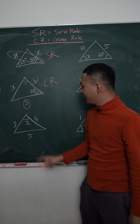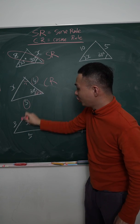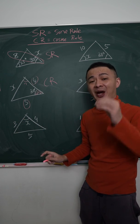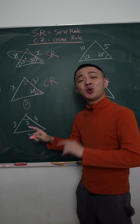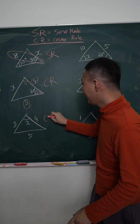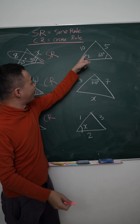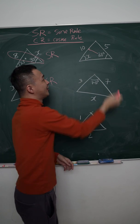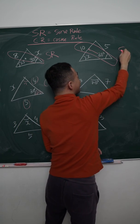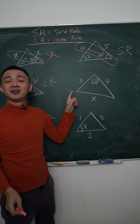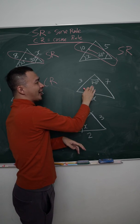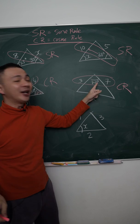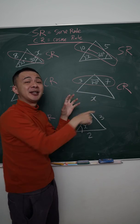Third triangle: I have three sides without any angle, so I can't use sine rule — use the second cosine formula. Fourth triangle: I have an angle and its opposite length of 10 — one combination — so use sine rule. Fifth triangle: two sides and one angle between — use cosine rule.